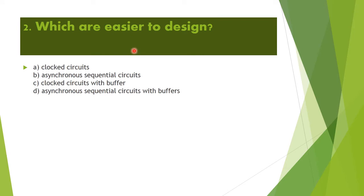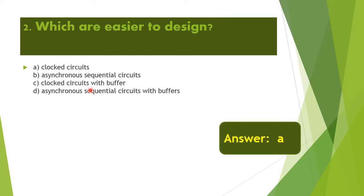Next question: Which are easier to design? Option A: clocked circuits. Option B: asynchronous sequential circuits. Option C: clocked circuits with buffer. Option D: asynchronous sequential circuits. The correct answer is Option A — clocked circuits. These clocked circuits are easier to design.